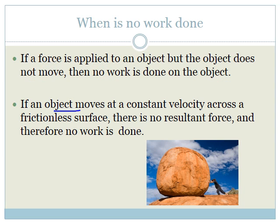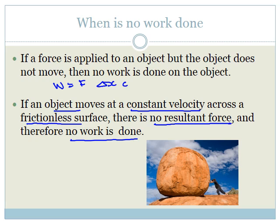Also, when an object moves at a constant velocity across a frictionless surface, there is no resultant force, so no work is done. Work equals F_net·ΔX·cosθ. If there is no resultant force, that number is zero, and zero times anything is zero — so the work done is zero. Those are the two important cases when no work is done.